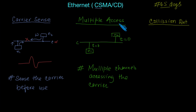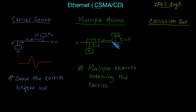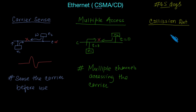When multiple channels transfer data at the same time, a collision arises. This collision has to be detected — which is called Collision Detection (CD). We need a mechanism to detect this collision and then take proper decisions to resolve it.